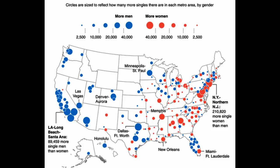Blue circles are more men, red circles are more women — single men and single women. You can see L.A., Long Beach, Santa Ana has the most single men. New York, New Jersey has the most single women.